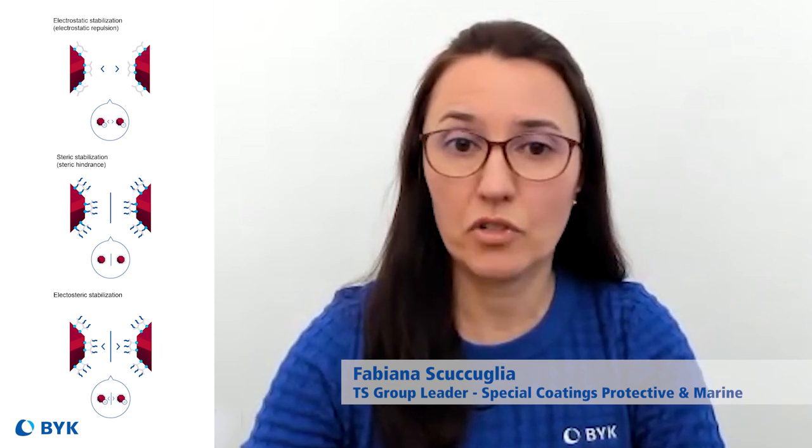Electrosteric stabilization employs both steric hindrance and electrical repulsion to maintain the separation of the particles. So when we talk about grind viscosity, how exactly do the wetting and dispersing additives help to decrease that viscosity to make it more workable? Good question. Removing the air from the pigment surface is the best process to see the viscosity reduction. Wetting out those pigments and properly deflocculating all of the pigment particles by creating primary particles is what drives this viscosity reduction.